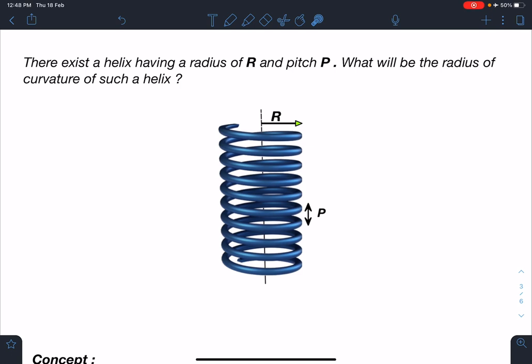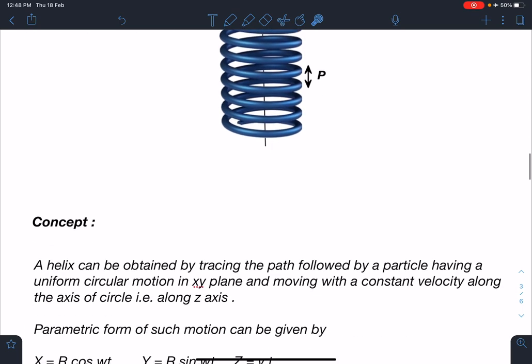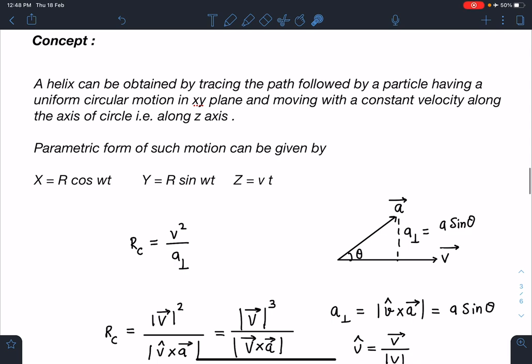A helix is constructed by the superposition of uniform circular motion and straight line motion in perpendicular direction. A helix can be obtained by tracing the path followed by a particle having uniform circular motion in xy plane and moving with constant velocity along the axis of the circle, that is along z axis.